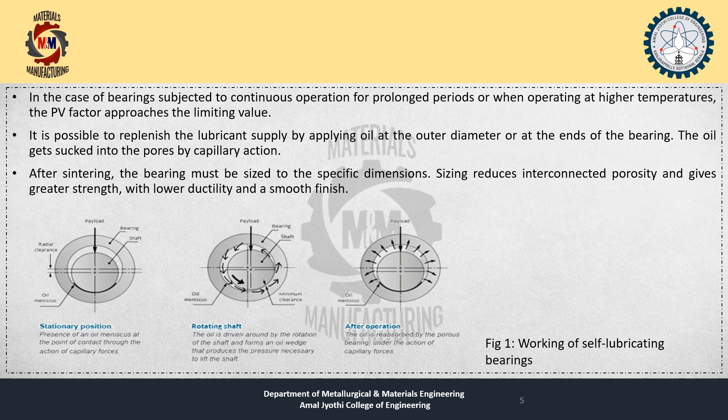This image shows the schematic working of self-lubricating bearings. In the first image, it is in the stationary position where the oil is fed at the bottom side of the bearing. The second image shows the rotating shaft — when the shaft rotates, the bearing moves and the oil gets supplied to all the surfaces of the bearing. The third image shows the after-operation state where the excess oil gets reabsorbed into the bearings through the interconnected pores.